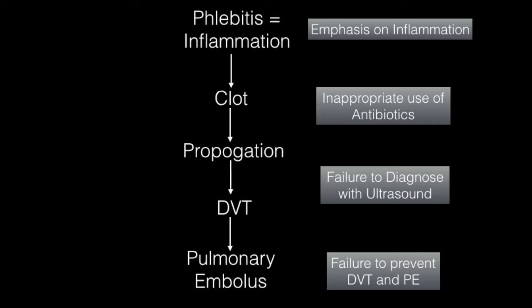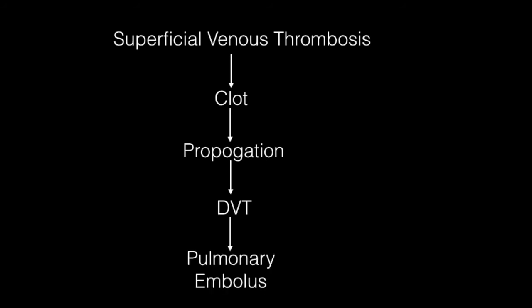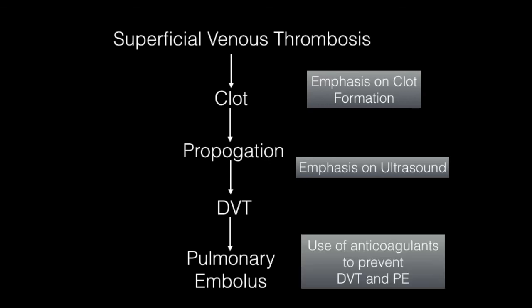Specialists now suggest that the term superficial venous thrombosis should replace the term phlebitis. The presence of clot within the vein can lead to propagation and spread to the deep veins, which can lead to pulmonary embolus. The benefit of using the term superficial venous thrombosis rather than phlebitis is that the emphasis is now correctly placed on clot formation, the importance of ultrasound in the diagnosis, and the appropriate use of anticoagulation — that is, blood thinning medication.